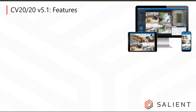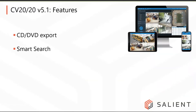Going back to secondary features of version 5.1: we've added CD and DVD export capability to the desktop client. You can now export video directly to a CD or DVD drive without using third-party burning software. This is a particularly popular export method because once a CD or DVD is written, it becomes read-only, which helps maintain the chain of custody process.